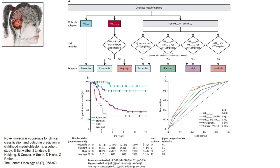A discovery of seven novel clinically significant subgroups improves disease risk stratification and consequently could inform treatment decisions. This paper, published in Lancet Oncology Journal, performed several survival analyses on samples from patients aged 3 to 16 years within a cohort of 215 who received surgical resection and irradiation as an initial treatment.